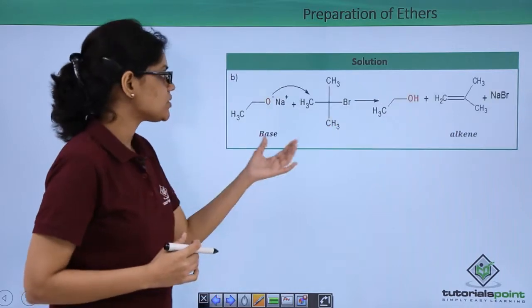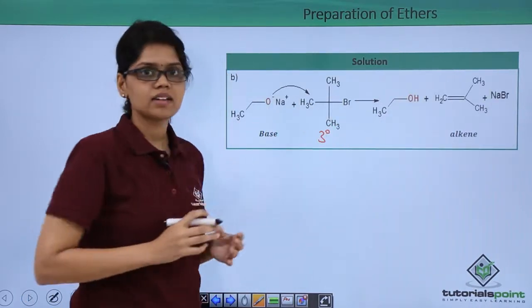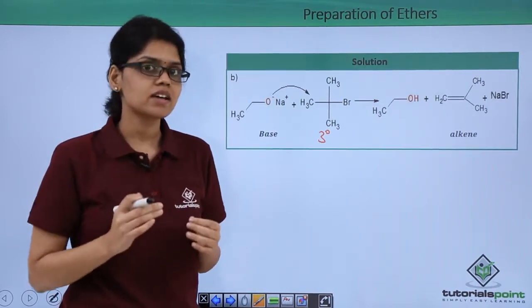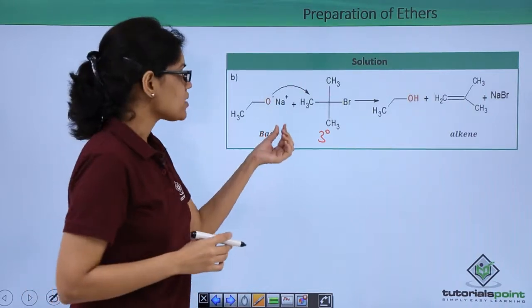Now in the second case, we have employed tertiary alkyl halide and ethoxide ion as the alkoxide ion. Here we can see that the alkoxide ion now acts as a base and not a nucleophile and abstracts hydrogen atoms, resulting in the formation of an alkene, and here we do not end up getting an ether.